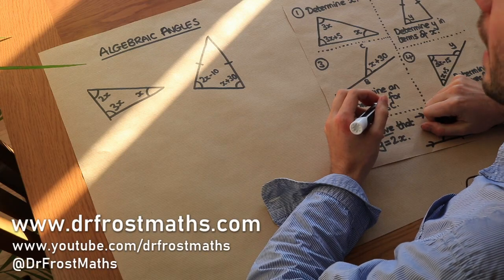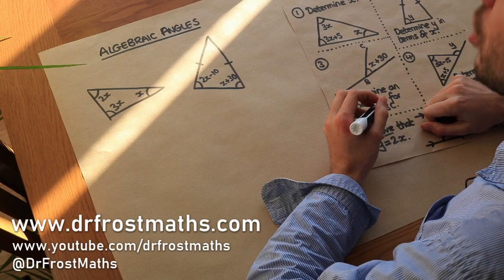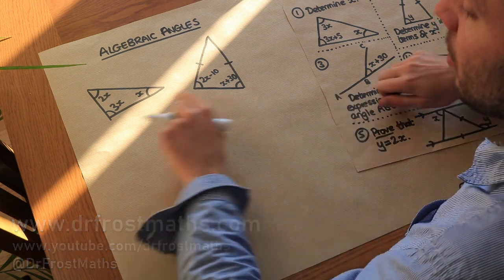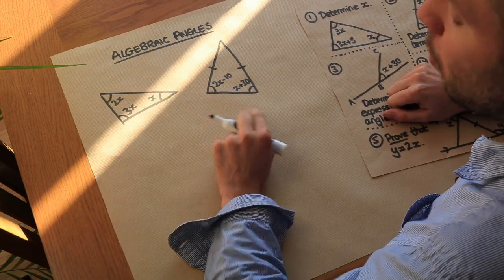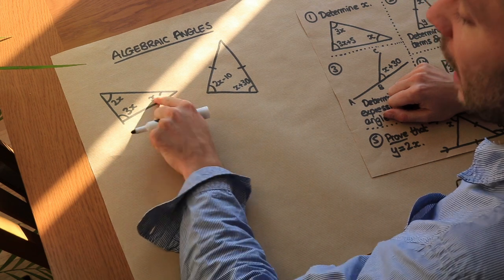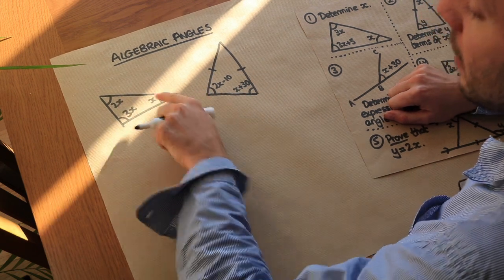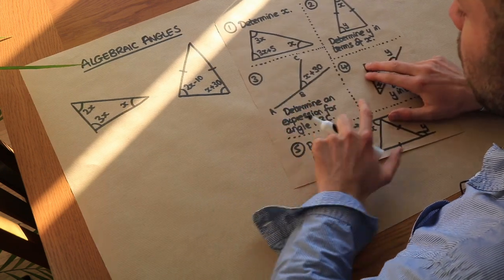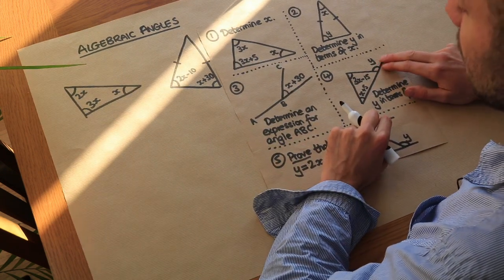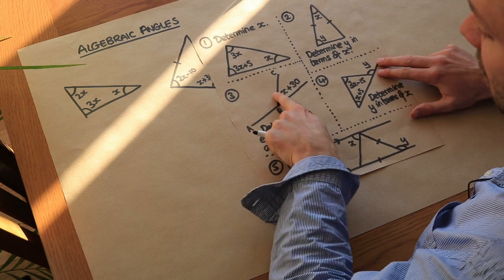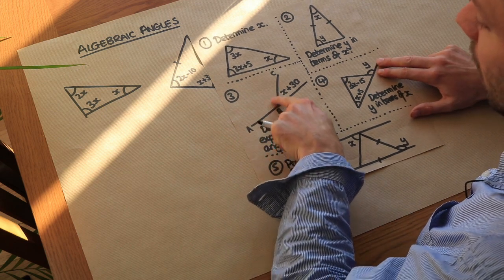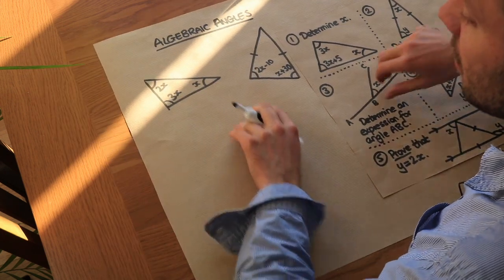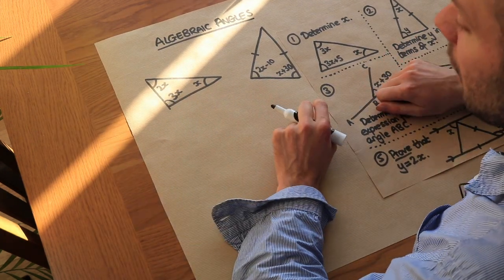Hello and welcome to this video on algebraic angles. There are two different types of problems we're going to be looking at. One type is where the angles contain variables and we want to find the value of that variable — so how would we find the value of x given these angles in a triangle? The second type is where we want to find an expression for a certain angle in terms of x. Let's look at the first type first.